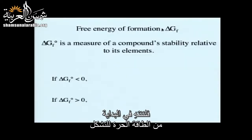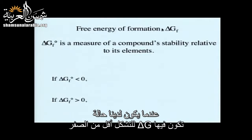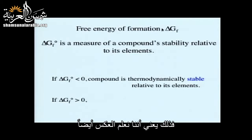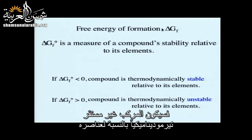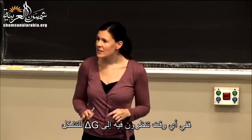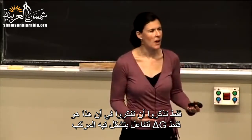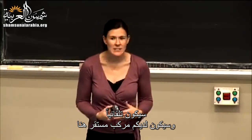Let's finish up with free energy of formation. When we have a case where delta G of formation is less than zero, we're talking about a compound that is thermodynamically stable relative to its elements. Conversely, when delta G of formation is greater than zero, the compound is going to be thermodynamically unstable relative to its elements.